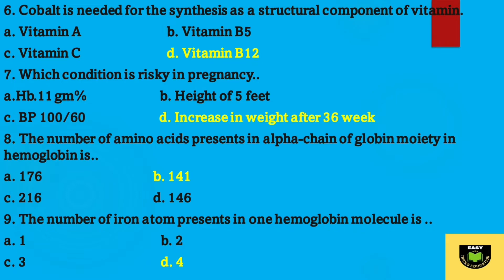Question number six: cobalt is needed for the synthesis as a structural component of — option D, vitamin B12. Question number seven: which condition is risky in pregnancy? Option D, increase in weight after 36 weeks is the correct answer.